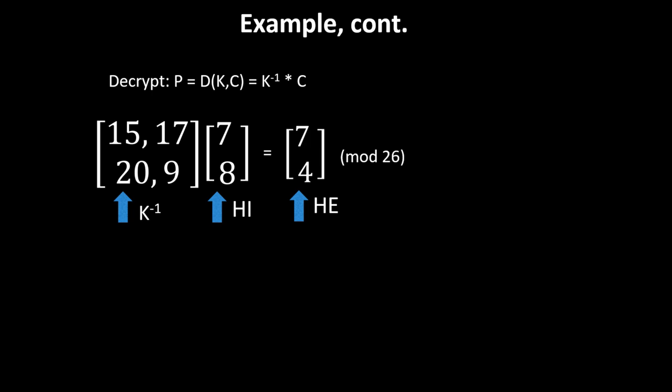We map it back: [7, 4] maps back to HE, which is exactly the same two letters that we had in our original message.